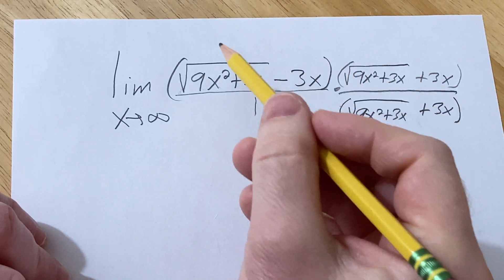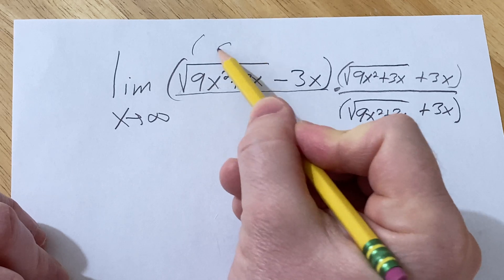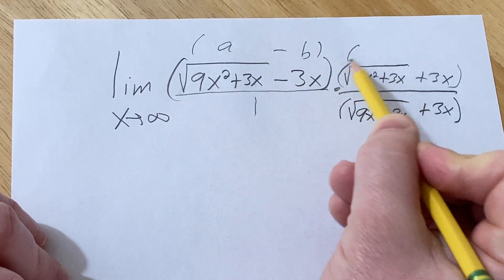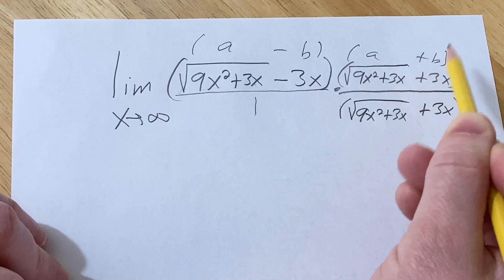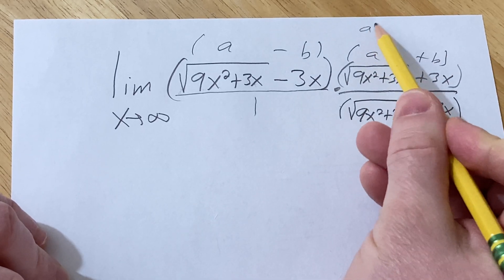Okay, so now we're going to use a familiar formula, the difference of squares formula. It says if you have a minus b times a plus b, we know that this is a squared minus b squared.